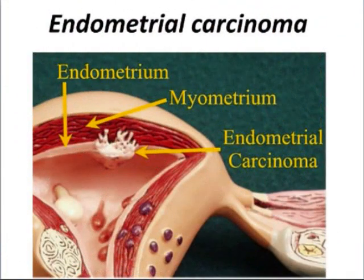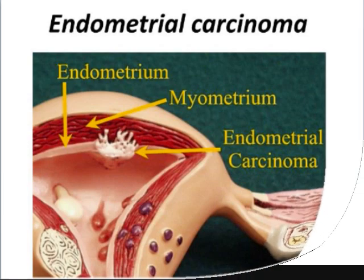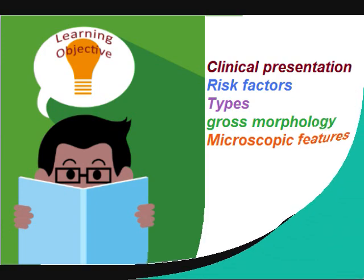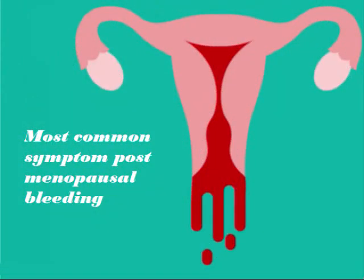Today we are going to discuss endometrial carcinoma — carcinoma arising from the endometrial lining of the endometrial cavity. The learning objectives of today's video are: clinical presentation of endometrial carcinoma, risk factors, types, and gross and microscopic morphology.